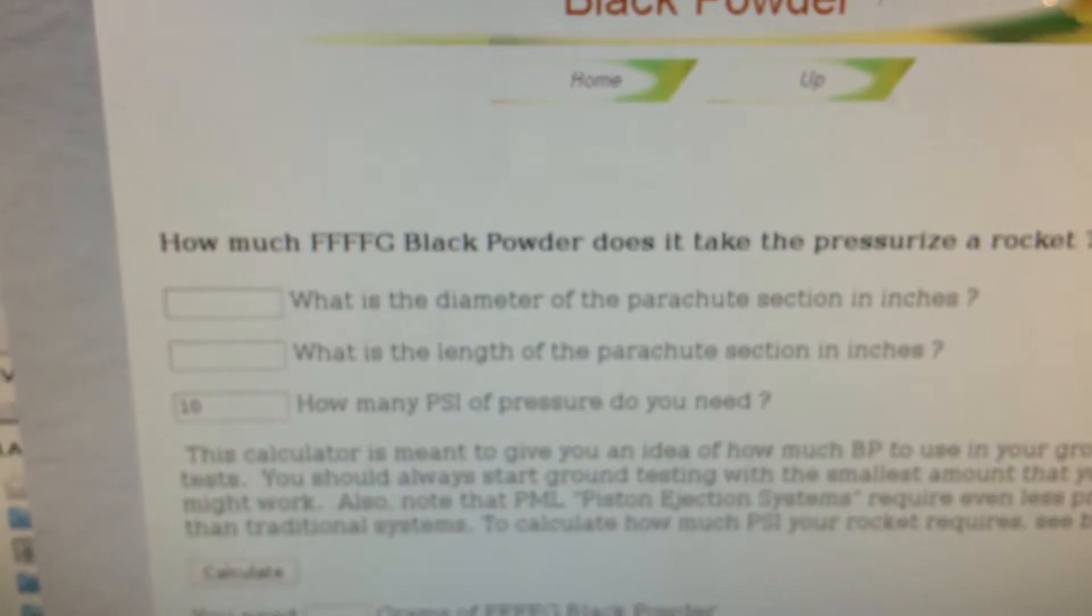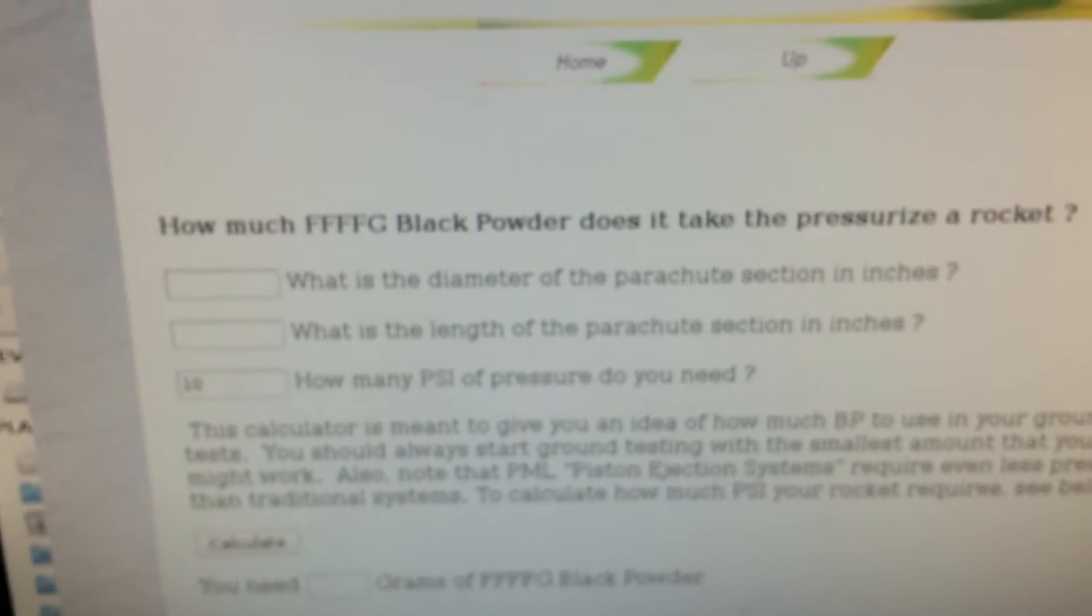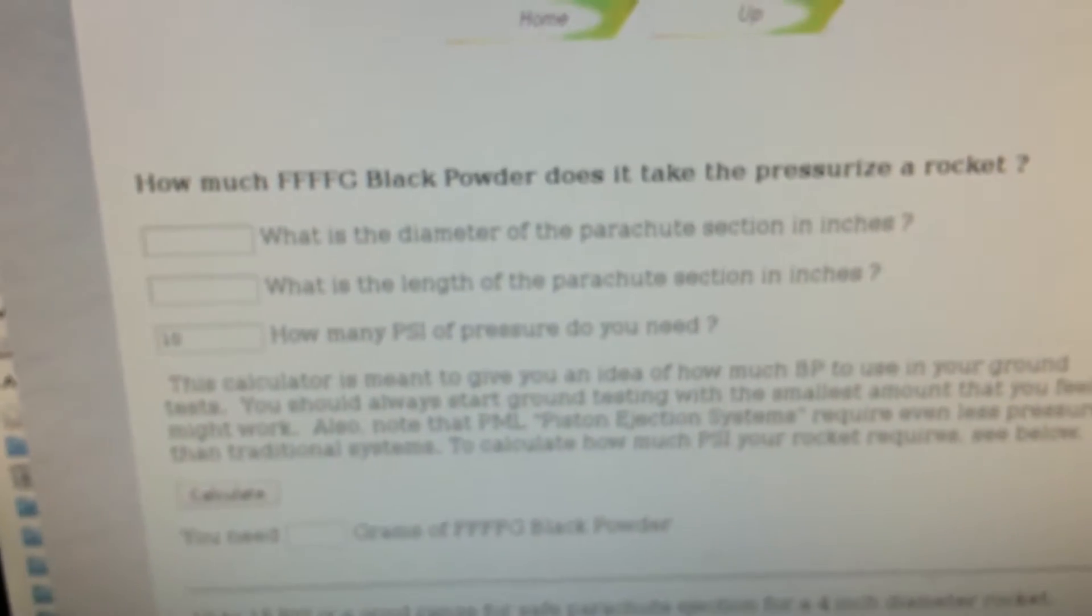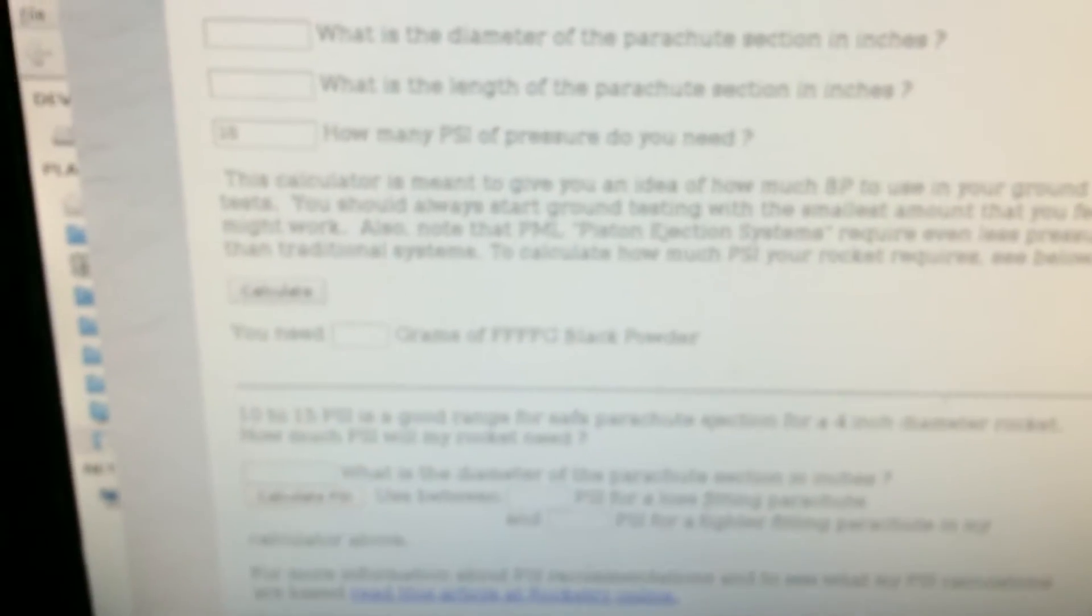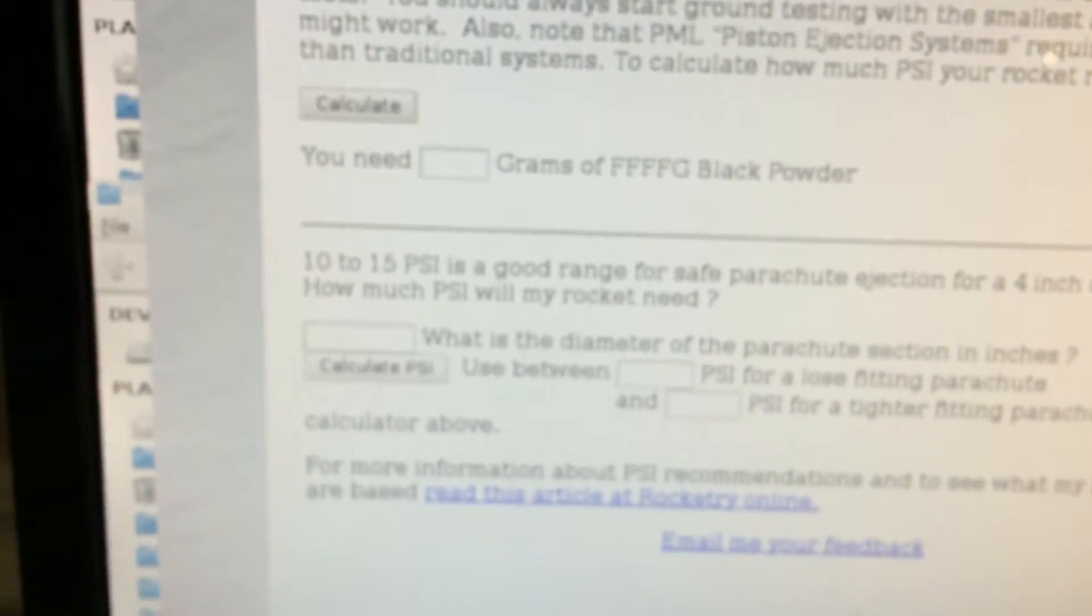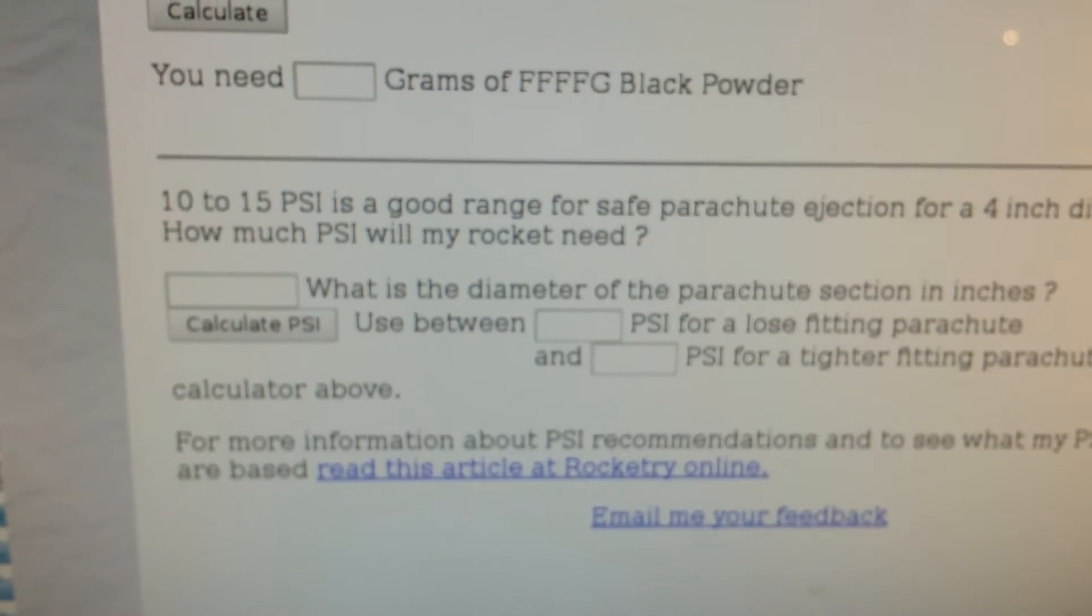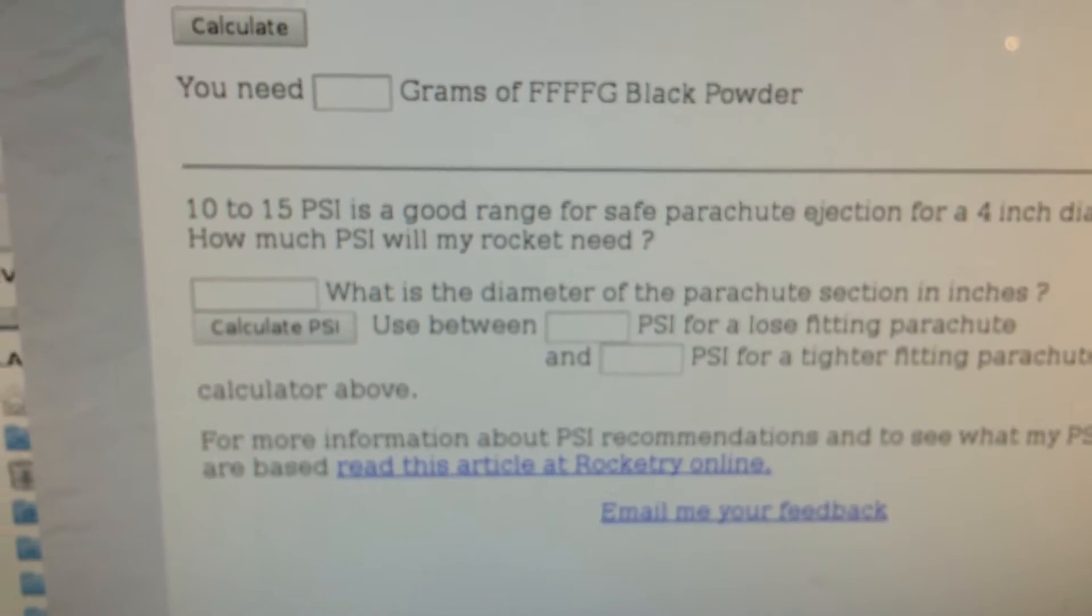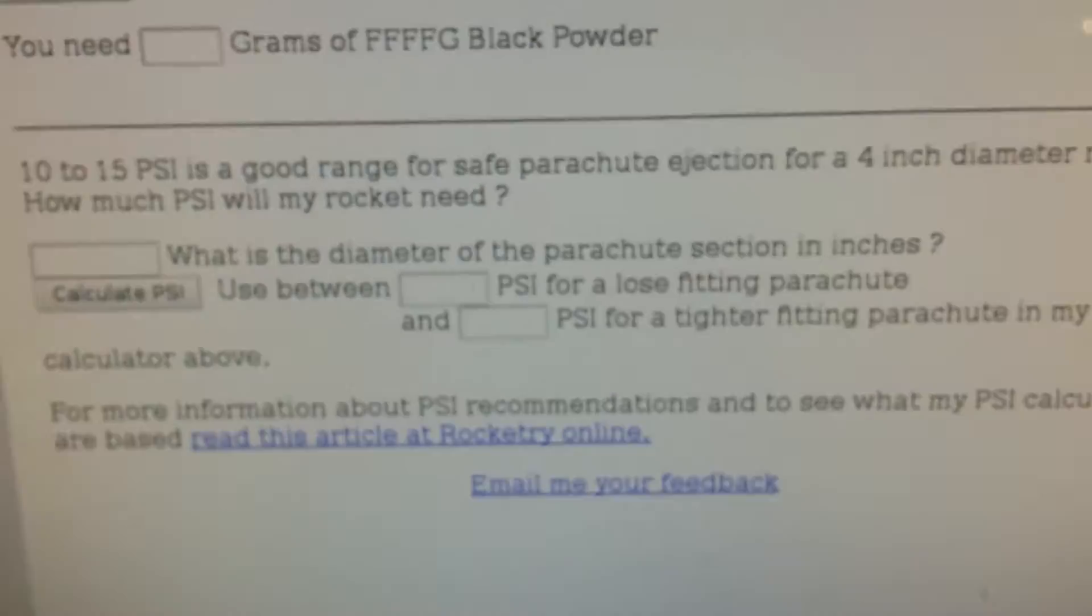You tell what the diameter of your parachute section is in inches—in my case it's four—the length of the parachute section in inches, and how much psi you need. If you scroll down you can find out how to calculate how much psi you need for the specific diameter rocket you have. In my case it's four inches which ranges between 10 to 15 psi.